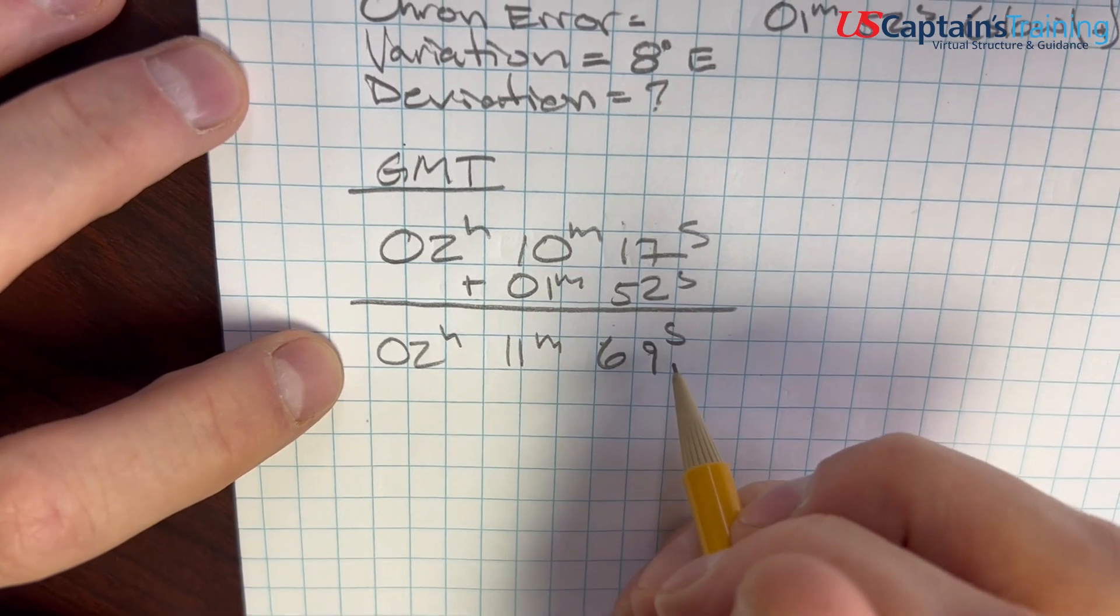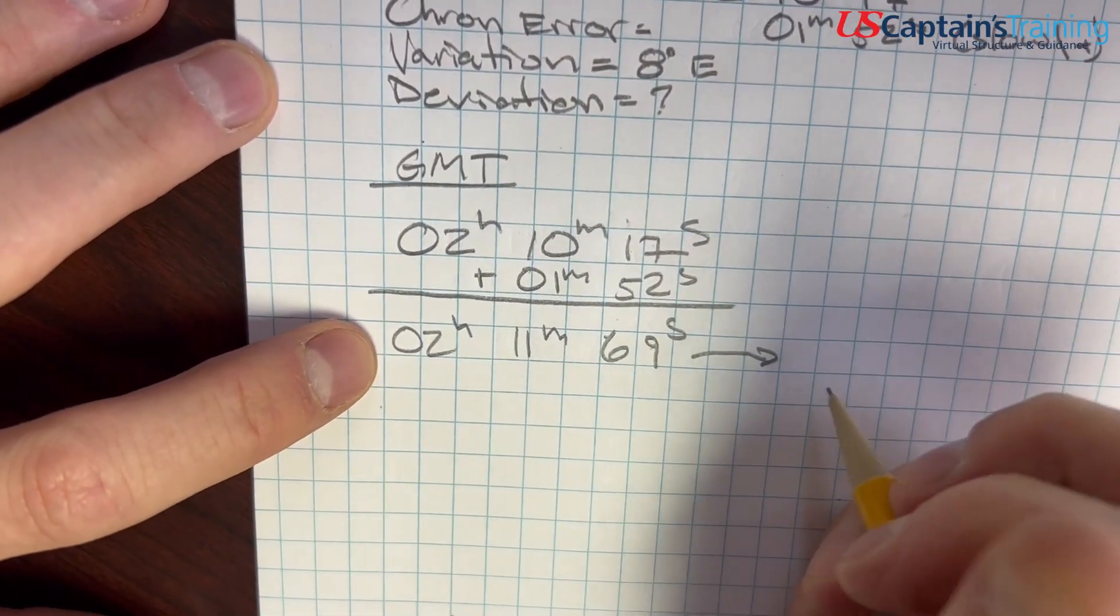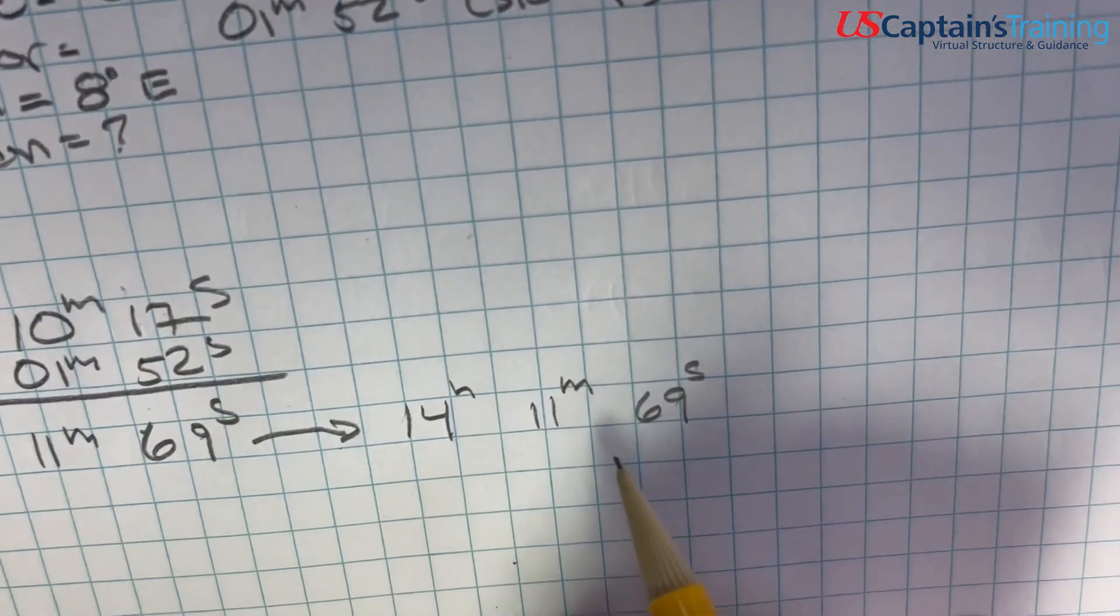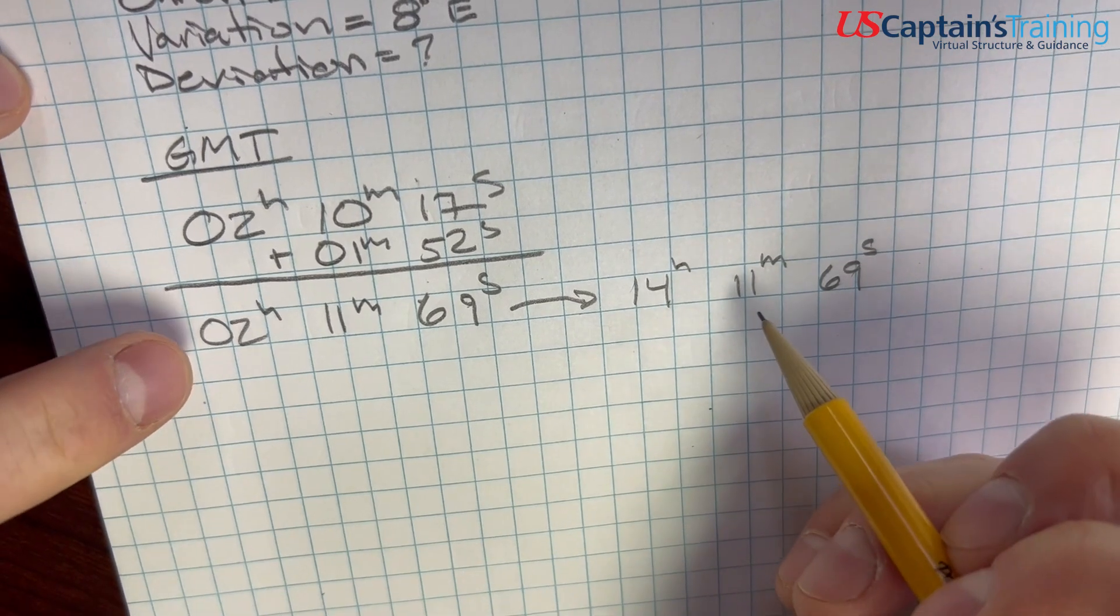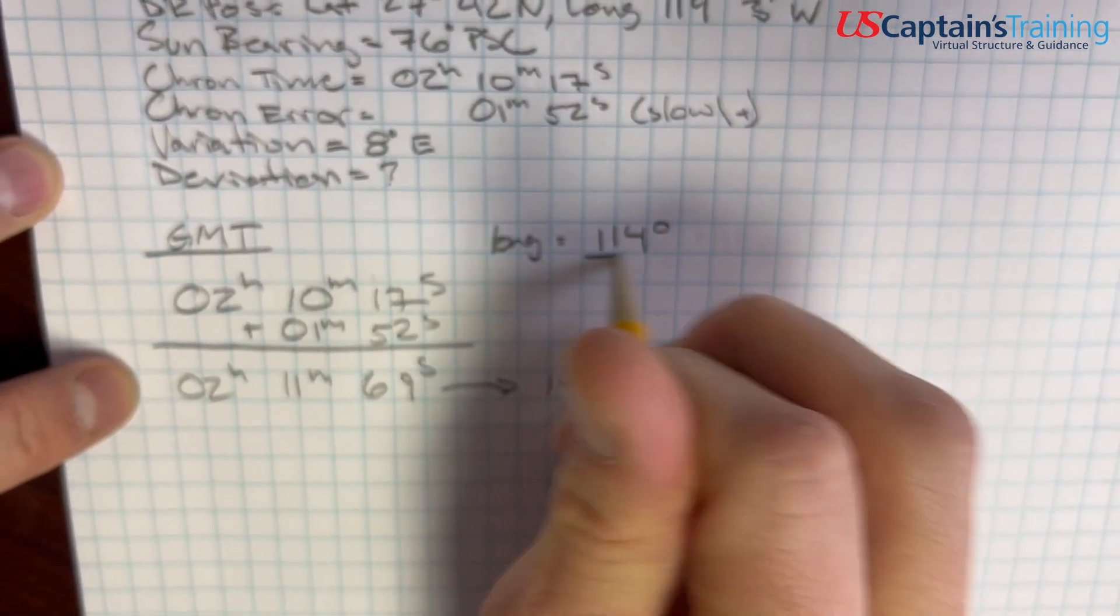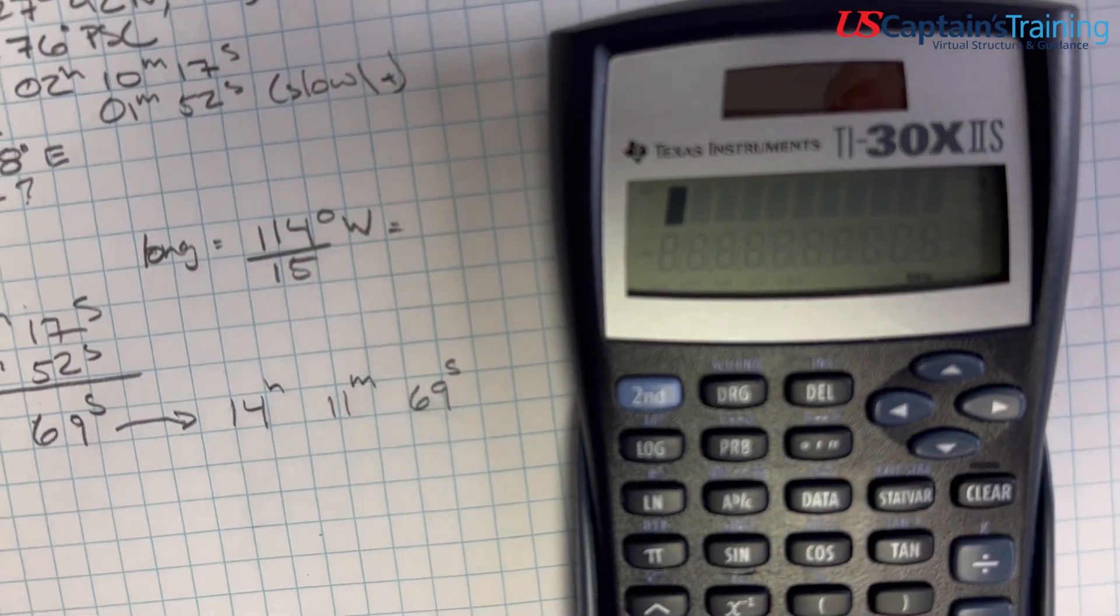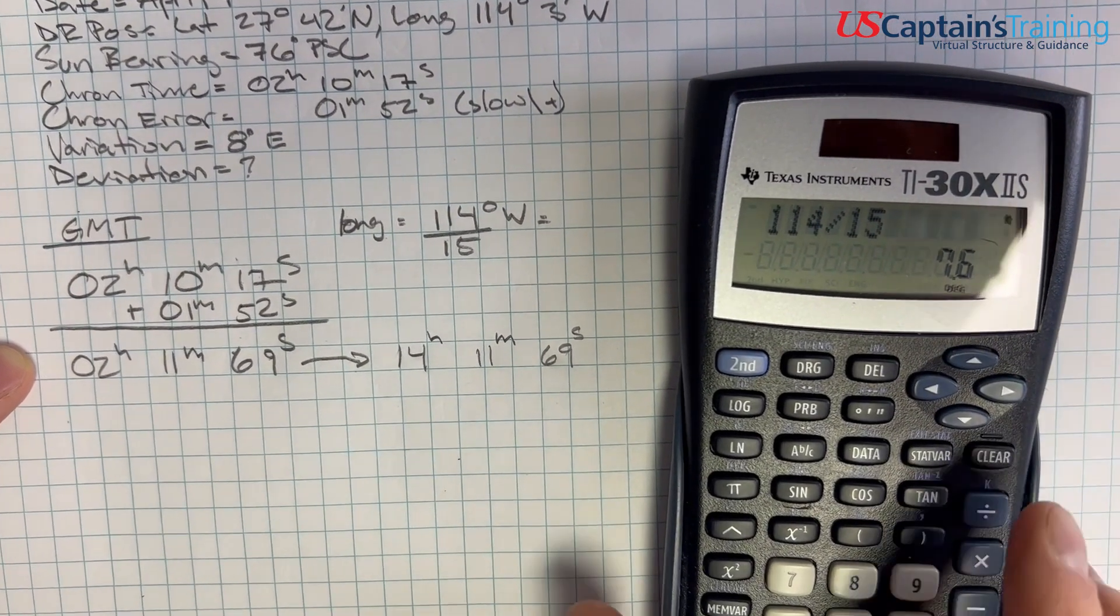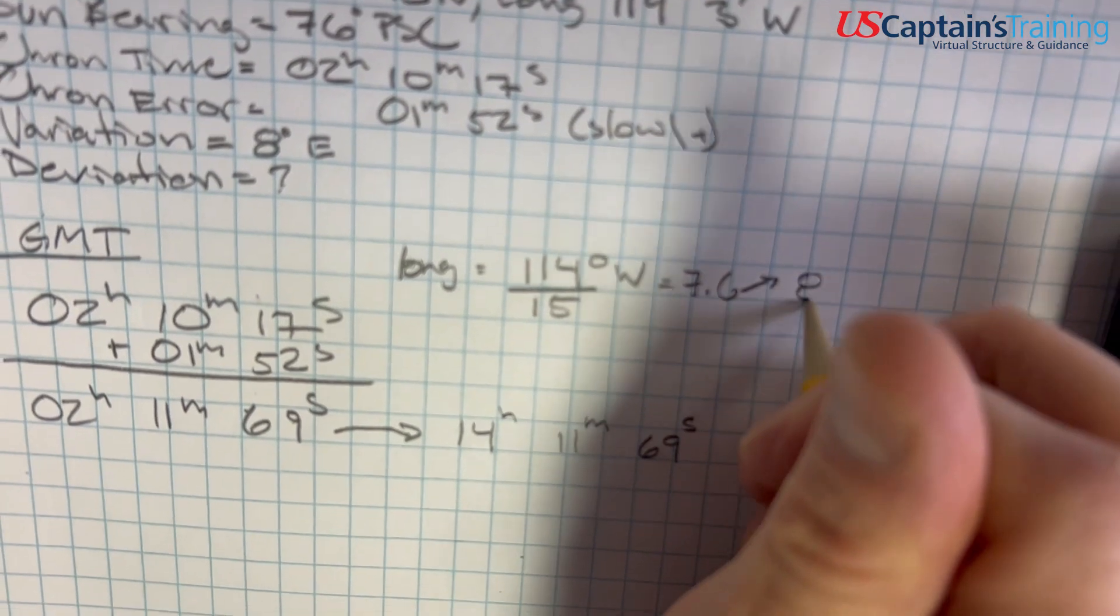So this chron time, interestingly, there's ambiguity in the chronometer because it's 12 hours, so it can go around twice in a day. So we need to come over here and add 12 to 2, and we get 14 hours 11 minutes 69 seconds. Now which of these possibilities is the one we need?